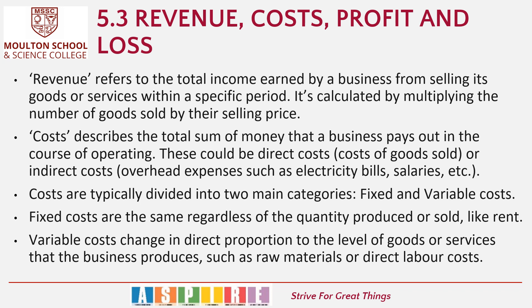We break down costs into fixed and variable. Fixed costs are the same no matter what quantity is produced — for example, a set amount of rent that you have to pay for the building, the same whether you are producing 1,000 units or zero units. Variable costs change when the amount of products you make increases or decreases. This is mainly waged labour costs and raw materials.